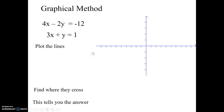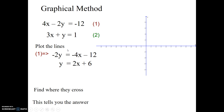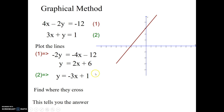Here's a more detailed example. We plot the lines. For line one, I rearrange it to y equals 2x plus 6, so the y-intercept is 6 and the gradient is 2 — rise over run. For the second equation I rearrange to y equals negative 3x plus 1, so the y-intercept is 1 and the slope goes down 3 across 1.